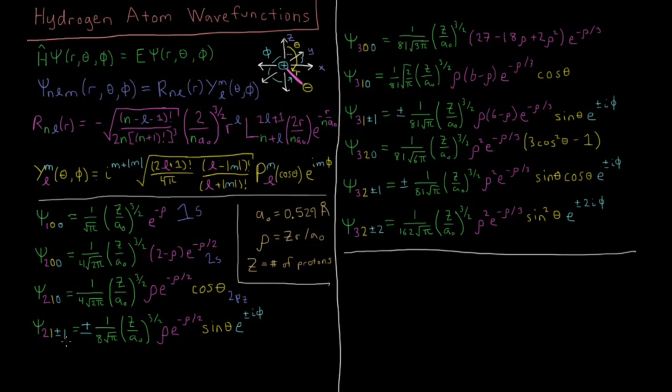When we start including non-zero values of m, because m can go all the way up to l and minus l, we have plus or minus 1, and that equals that same angular part but now times sine theta and this complex exponential, e to the plus or minus i phi. Each of these are not exactly the px and py orbitals because they're complex. They have this imaginary part. Usually chemists want to deal with functions that are real.